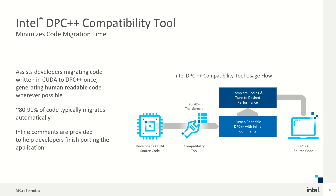There's also the Intel DPC++ Compatibility Tool. If you have code written in CUDA, this tool will convert 80 to 90 percent of your code automatically. The CUDA source code goes into the compatibility tool, and human-readable DPC++ code comes out with inline comments to help developers finish porting the application. This helps you move from CUDA to DPC++ in no time.